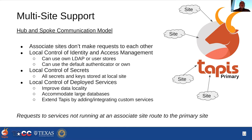TAPIS provides multi-site support using a hub and spoke communication model — a primary site with associate sites that communicate with it. Associate sites can communicate within themselves and with the primary site but not with each other. Reasons to deploy an associate site include: local control of identity and access management using your own LDAP or user stores; keeping secrets local so all secrets and keys stay on your local site; and configuring only the services you want deployed, improving data locality. You can also extend TAPIS by adding custom services not part of the basic platform. All requests to services not running at your associate site get routed transparently to the primary site.